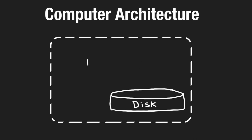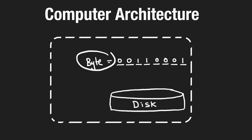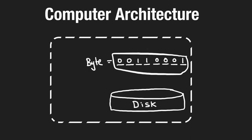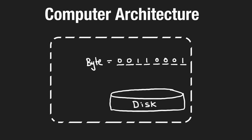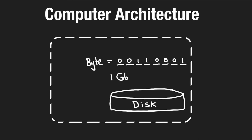A quick review: a byte is 8 bits, and each bit stores a 0 or 1. We use bits and bytes to represent information — a character like A or B — and combining them lets us build sophisticated software like games and videos. When we say a disk has 1 terabyte of storage, that T represents 10 to the power of 12, so it can hold a trillion bytes.